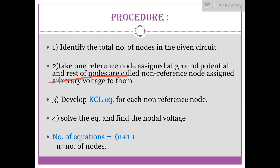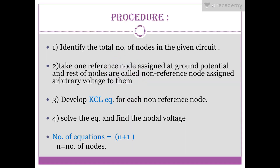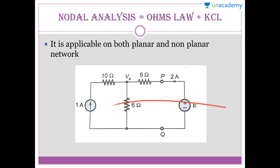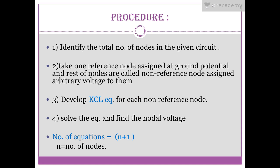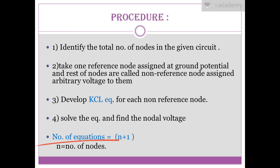Next, take a reference node and assign it ground potential — zero. The rest are called non-reference nodes; assign them arbitrary voltages. Here I assign zero to the reference node and Va to the other non-reference node. Then develop a KCL equation for each non-reference node, and finally solve the equations to find the nodal voltages.